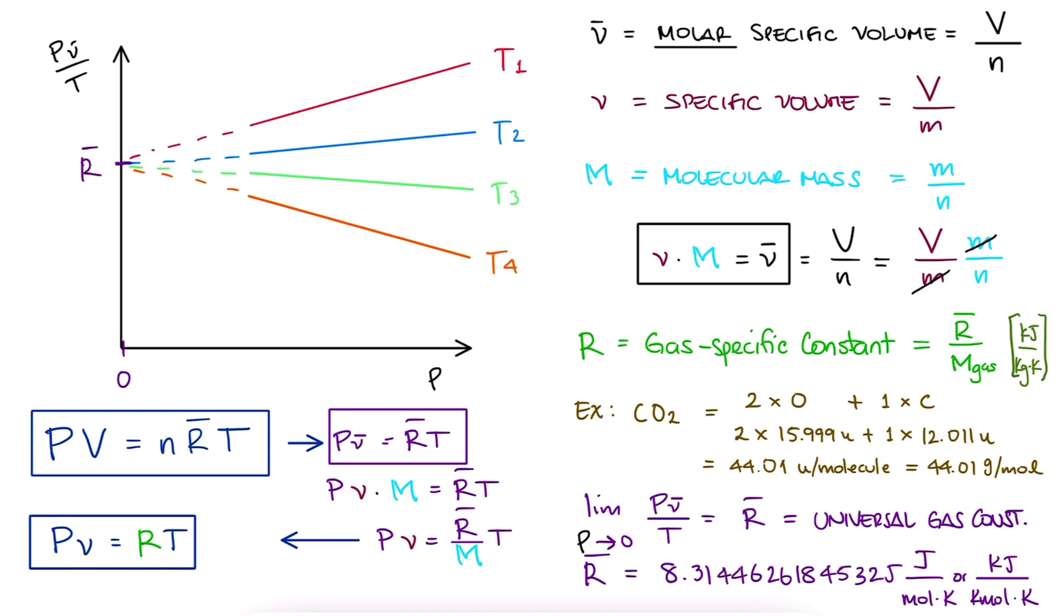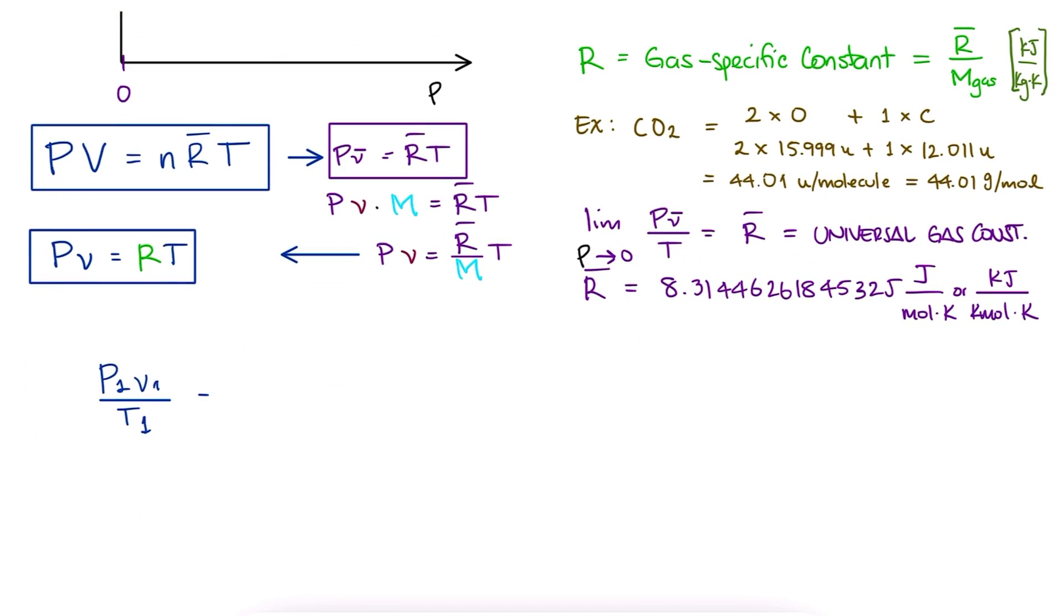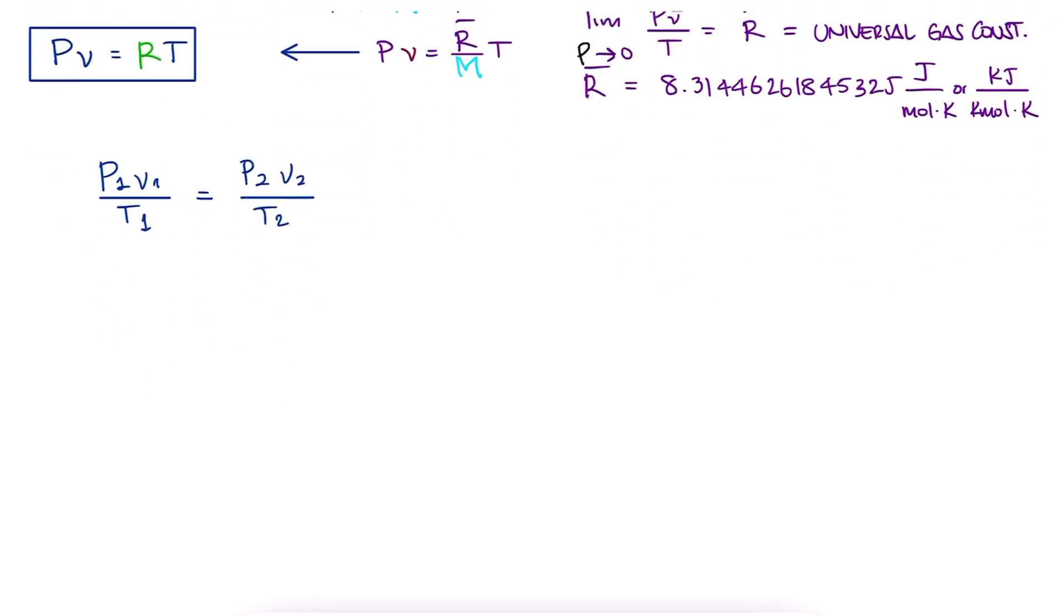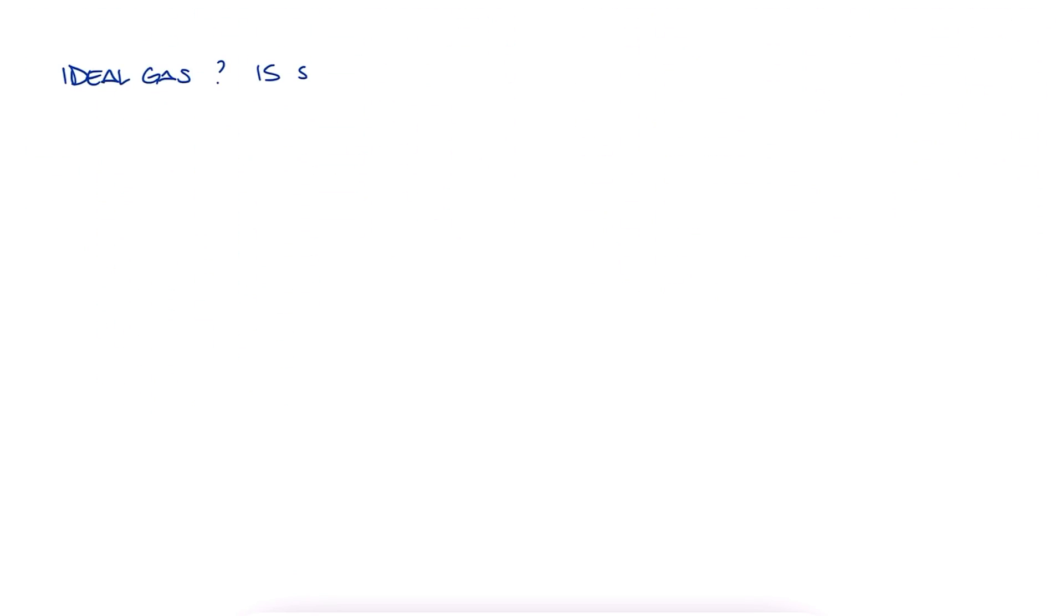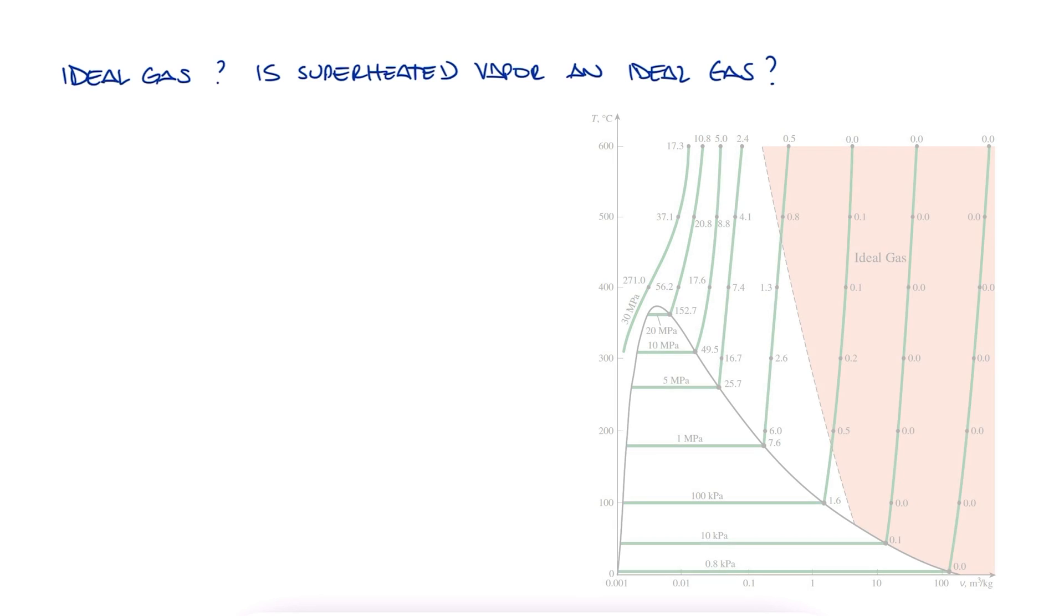This ideal gas equation is also useful to solve for properties from state 1 or state 2 if we know enough information about either state. Of course, this is only applicable to actual ideal gases, not all substances are ideal gases. Is water an ideal gas? Do you think we can use this, for example, for superheated water? Well, sometimes we can, sometimes we cannot.